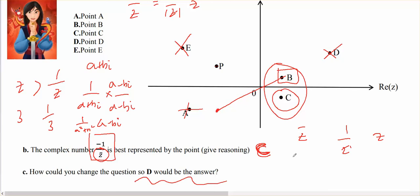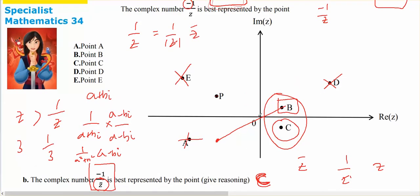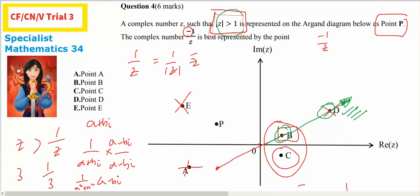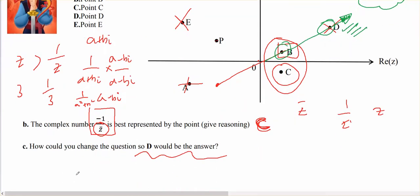And how would you change the question so that D was the answer? Well, D has the same angle as what B does, so it's got the same argument as B, except it's much, much bigger than B. Therefore, for D to be the correct answer, what I would like is the magnitude of Z to be bigger than 1, sorry, smaller than 1. Because if the magnitude of Z is smaller than 1, 1 on Z will be bigger. However, it's going to be, so the only change that I would make is the magnitude of Z is smaller than 1. Therefore, instead of B, D would be my right answer.